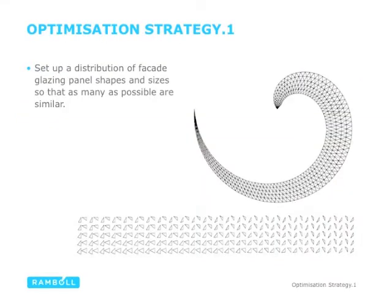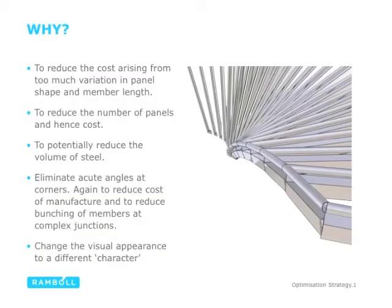We set two strategies. The first is to establish a distribution of facade glazing panel shapes and sizes so that as many as possible are similar. This will reduce the cost arising from variation in panel shape and member lengths, reduce the number of panels, potentially reduce the volume of steel, eliminate acute angles at corners, and ultimately change the visual appearance of the building giving it a different character.